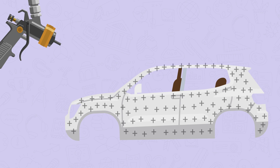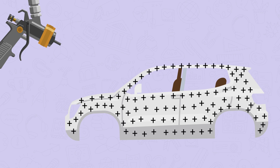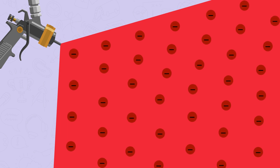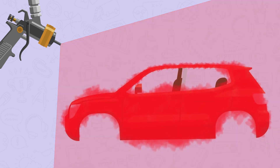The bodywork of the car is statically charged. The spray paint is statically charged too, with an opposite type of charge to that of the bodywork. The paint droplets have the same type of charge so that they will repel each other and spread out.